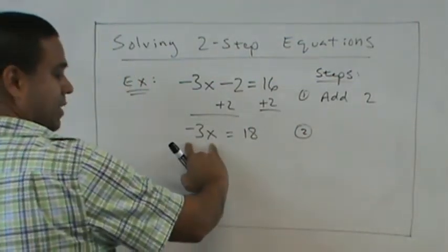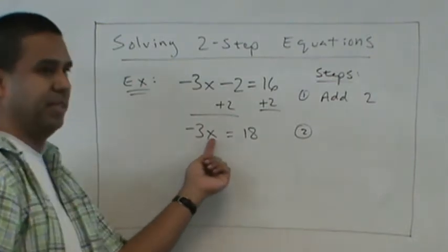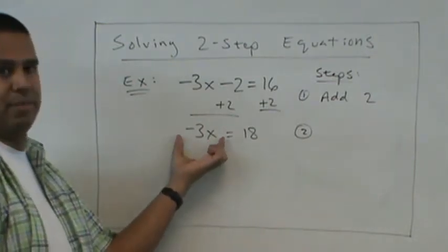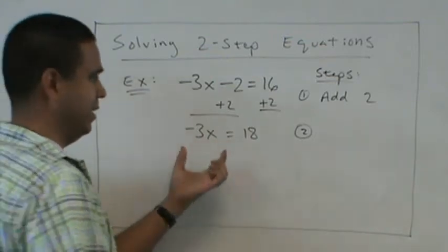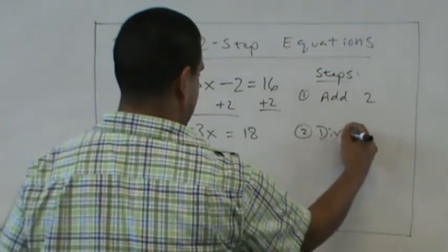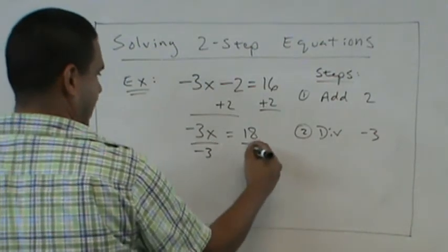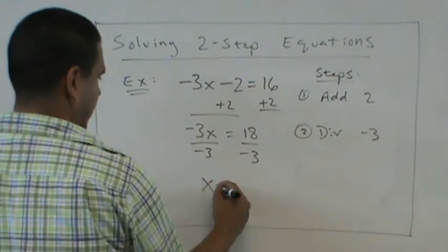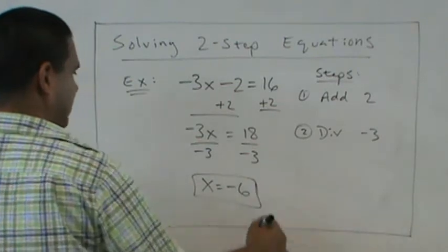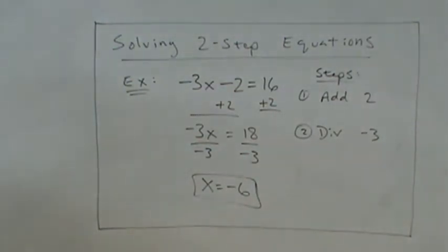This is a multiplication. This is negative 3 times the number. The inverse operation of multiply is? Divide. So we would divide by negative 3. So we do get negative 6. Very good. Excellent. How many got negative 6? Get all those hands. Excellent.